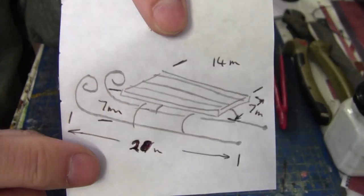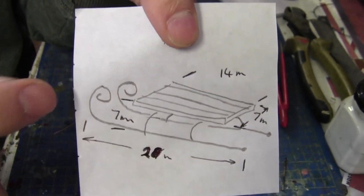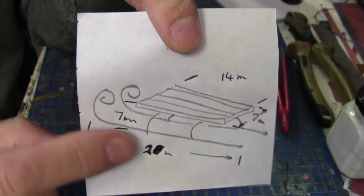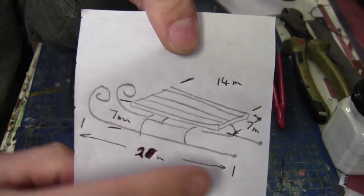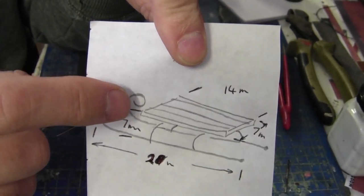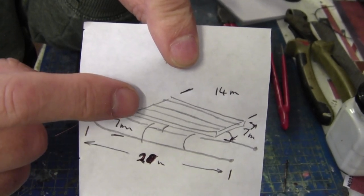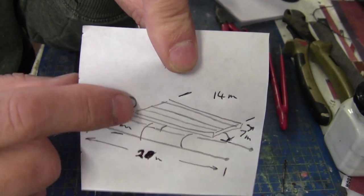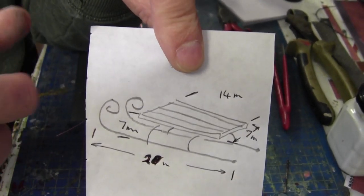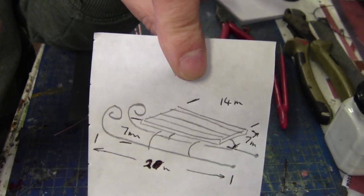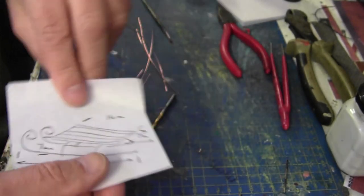Here are the measurements for the sledge. It's 20 millimeters long, that's from the tip of the curl here to the edge of the runner, 7 millimeters high off the floor and approximately 7 millimeters deep and 14 millimeters long for the actual seat. But that might change as we go along.